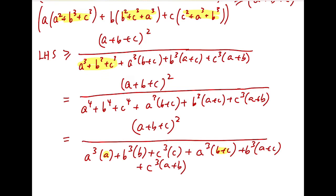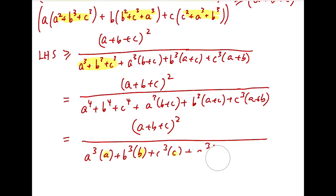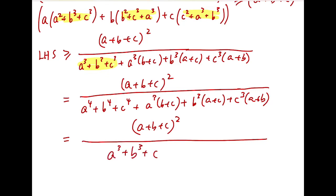These terms A and (B plus C) can be grouped together because they share a common factor of A cubed. Similarly, B and (A plus C) can be grouped together as well, and C and (A plus B) can do the same. So the terms at the denominator can actually be rewritten as (A cubed plus B cubed plus C cubed) times (A plus B plus C), because the common factors A cubed, B cubed, C cubed are all multiplying by (A plus B plus C).